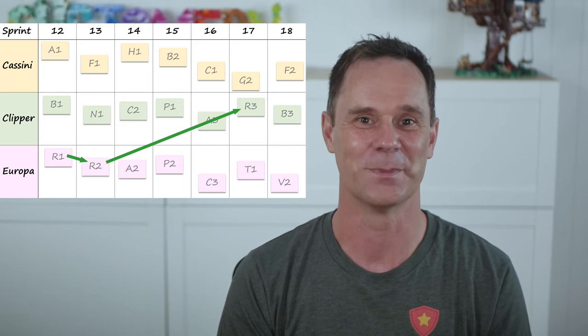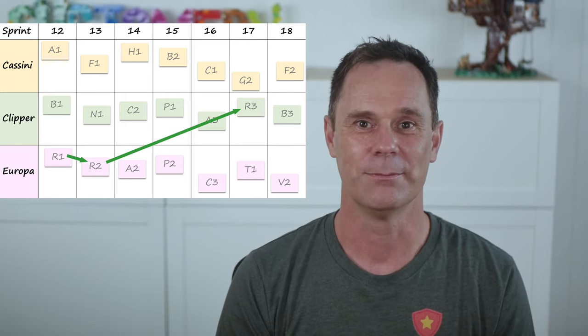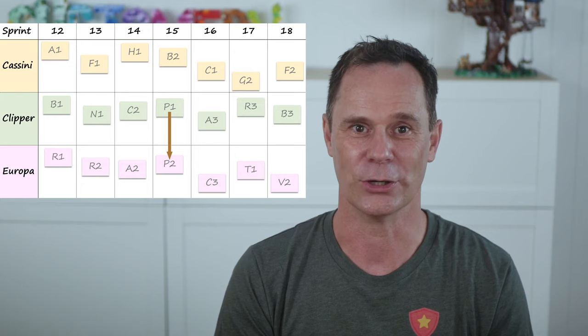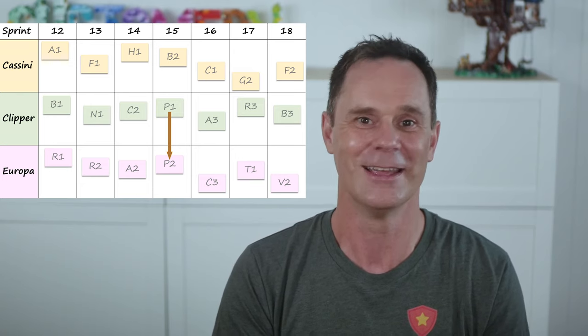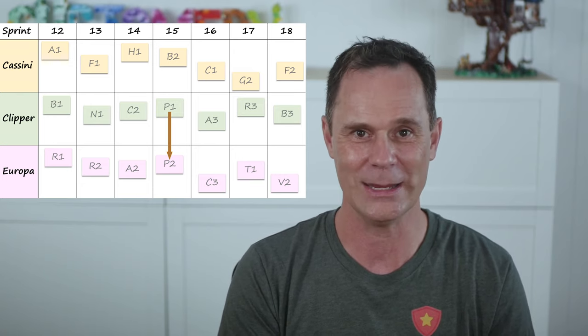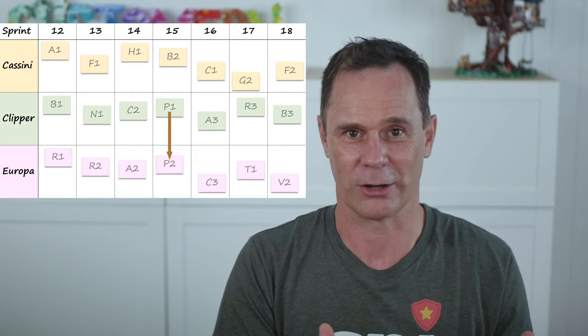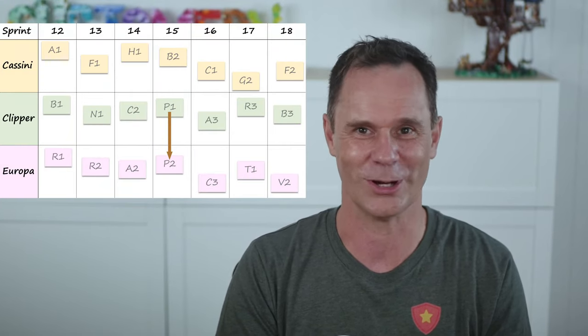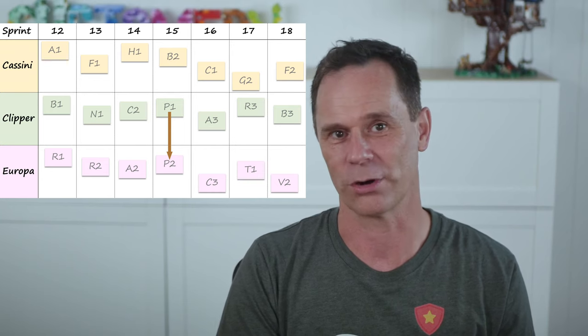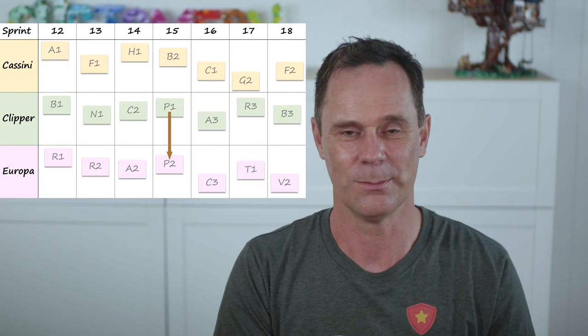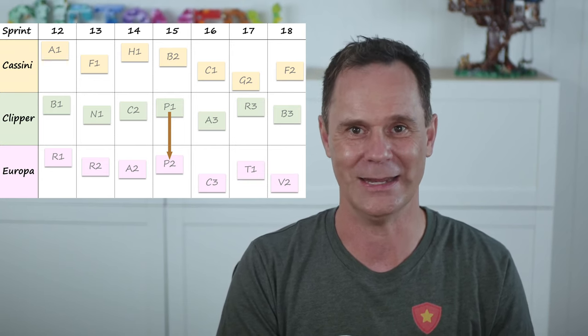Everyone's still happy so far. But with feature set P, Europa is dependent upon Clipper finishing P1 in the same sprint. Oh, that's awkward — that's too close for comfort for most teams. Clipper and Europa should have a grown-up conversation with the product owner to renegotiate the order of the backlog and re-sequence P1 and P2.